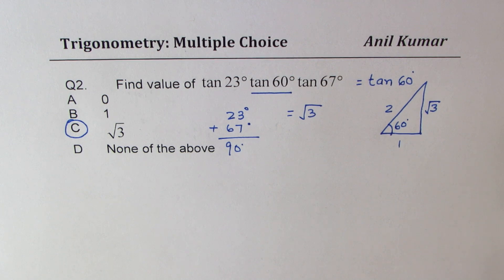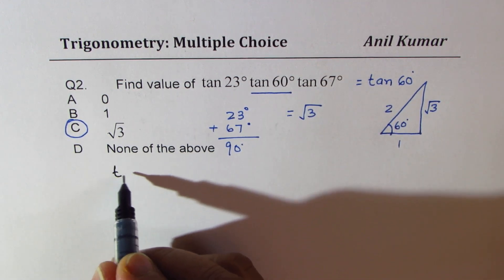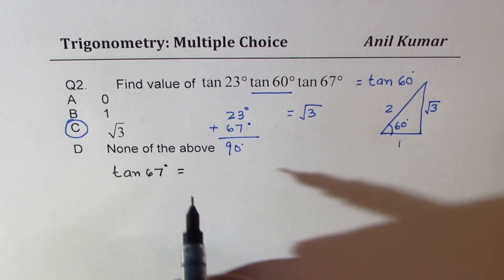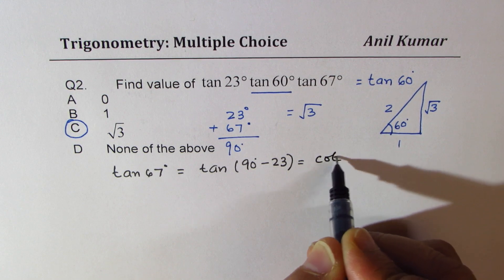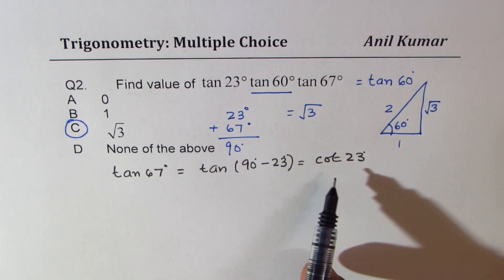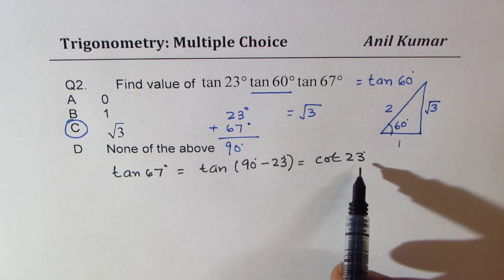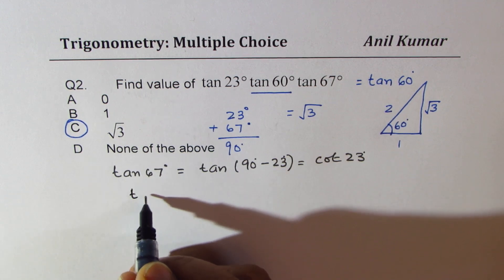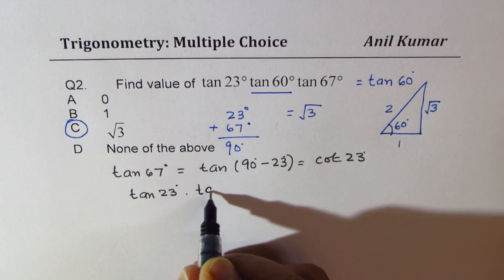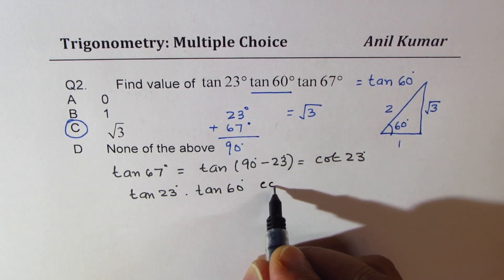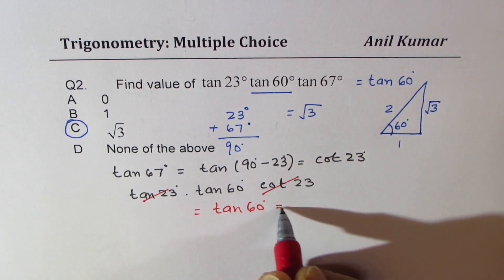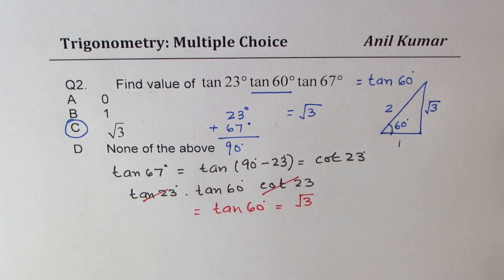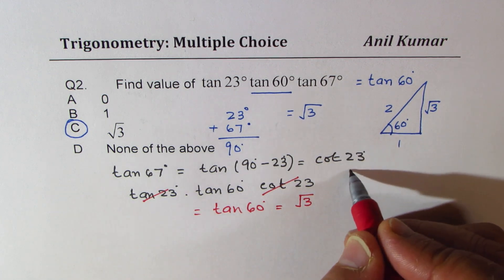Now, let me tell you one more concept here. We can also say that tan of 67 degrees is equals to tan of 90 degrees minus 23 degrees, which is cot of 23 degrees. Do you see that? So I could replace tan of 67 as cot of 23. So I could also write this expression as tan of 23 degrees times tan of 60 degrees times cot of 23 degrees. And cotangent and tan are reciprocal functions. So we will get tan of 60 degrees, which is square root of 3. So I hope you could also use co-function identity. So this is called co-function identity.